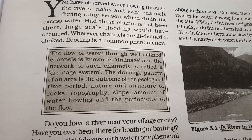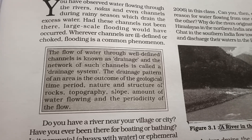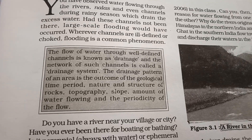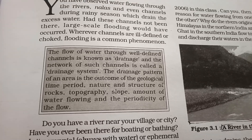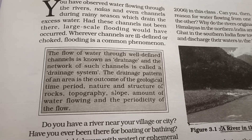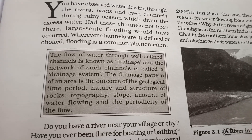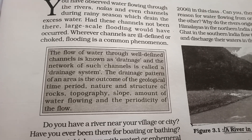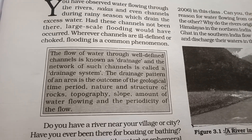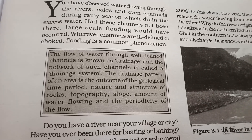The whole network of channels is called the drainage system. The drainage pattern of an area is the outcome of the geographical time period, nature and structure of rocks, topography, slope, and amount of water flowing. It depends on the slope of the river, topography, and the flow of water.